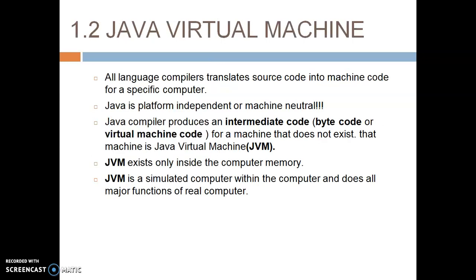Java Virtual Machine — all language compilers translate source code into machine code for a specific computer. Before Java, earlier programming languages followed one concept: they converted the source code into machine code. But when we are talking about Java, it is a two-stage system. First, we convert the source code, i.e., Java code, into bytecode — that is intermediate machine code or virtual machine code. Bytecode is also called magical code of Java.